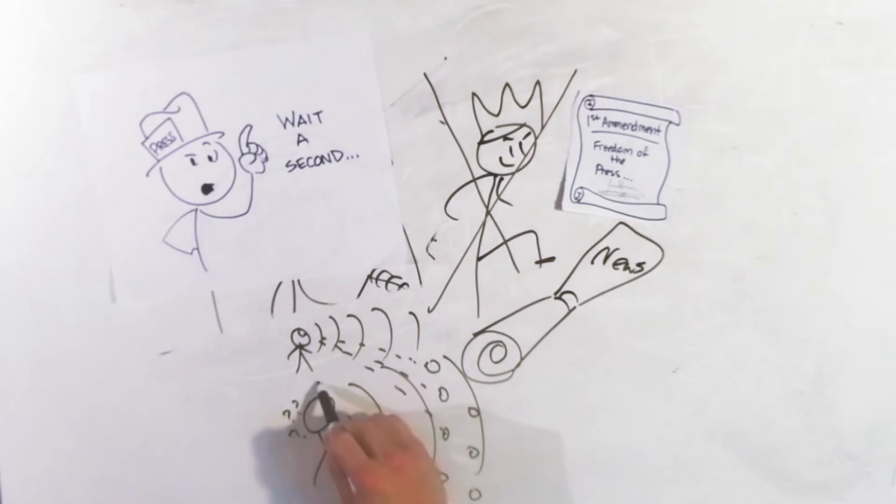Thirteen channels becomes thirteen hundred channels, which becomes DVR and On Demand, which becomes Netflix and YouTube. FM radio becomes satellite, and XM becomes iTunes and Pandora.